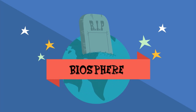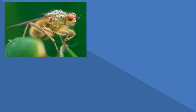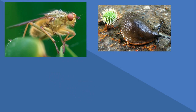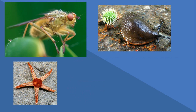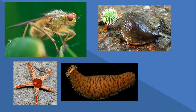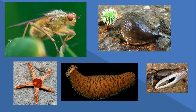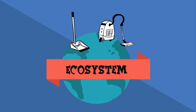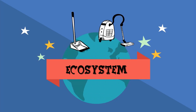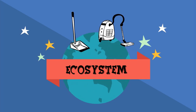We have dung flies, slugs, sea stars, sea cucumbers, and fiddler crabs. All of these are organisms that feed on dead organic matter in an ecosystem. As a result, they help clean up the ecosystem and return nutrients so they can be reused.